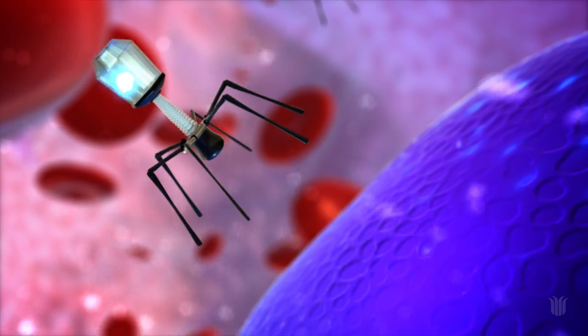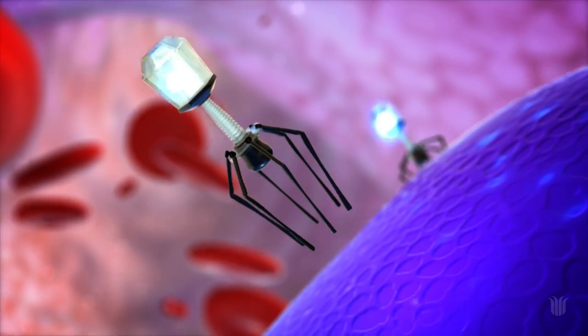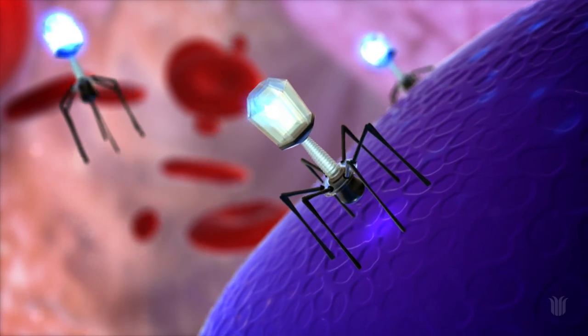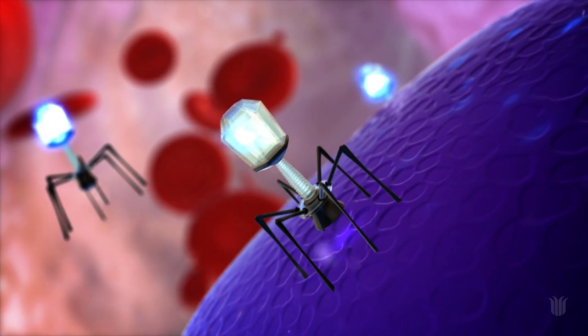The first stage of the cycle is attachment. To bind to a host cell, there must be specific receptors on the bacterial membrane to attach to. This determines a phage's host range.